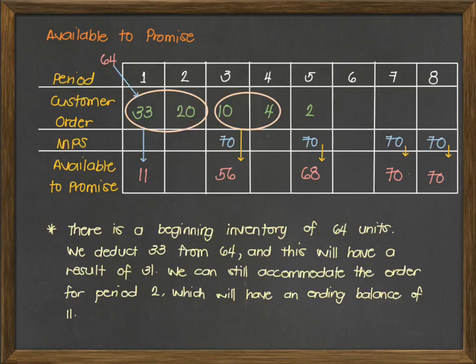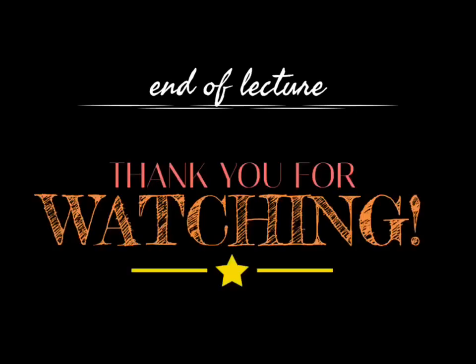If there is any variation with our orders or forecasts, these are the available units we can commit to customers. This ends the discussion for available to promise and the master production schedule. If you have further questions, comments, or suggestions, feel free to comment them below or reach out via Facebook Messenger. I'll see you again on our next video and lectures. Thank you for watching.